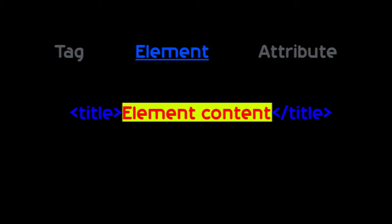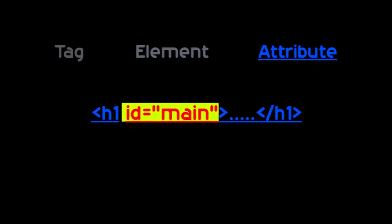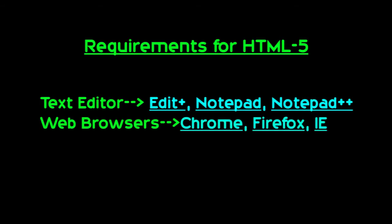Next, elements — elements mean content. The element represents the data which is displayed on the web browser. These elements are enclosed by the start and end tags. Next, attributes — sometimes we have to apply some properties to the element and tags; at that time we use these attributes to identify the tags.